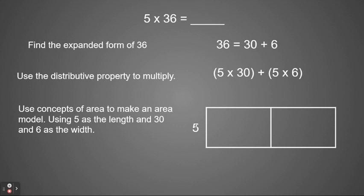We're going to put 5 as our length and above the first box we'll put 30 and above the second box we'll put 6. So now we have two rectangles, one with a length of 5 and a width of 30 and the second one also has a length of 5 because they're both the same and a width of 6. So now remember to find area we do length times width.